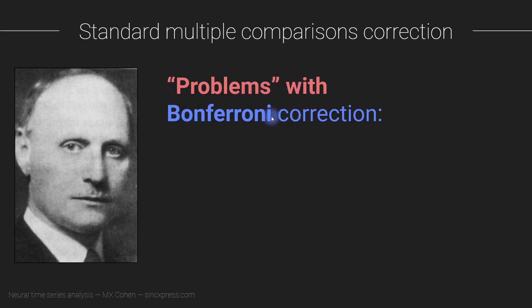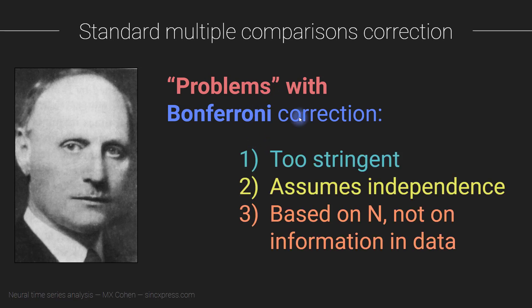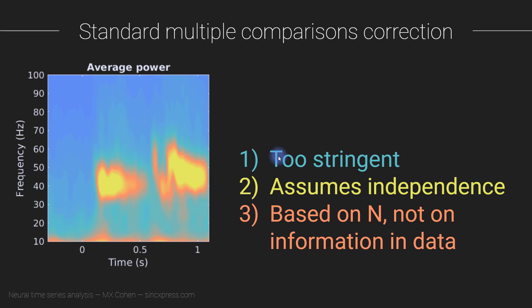I encourage you to pause the video and think about the issues yourself. I've identified three issues with Bonferroni correction: one, it is too stringent; two, it assumes independence — which is violated in this context; and three, it is based purely on n and not on the information content in the data.